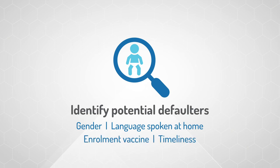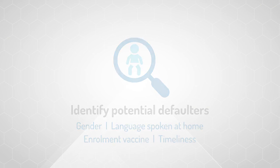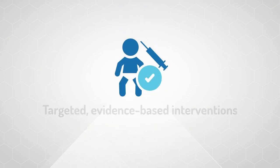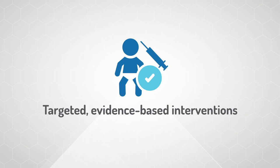language spoken at the child's home, enrollment vaccine, and timeliness. Accurate identification of potential defaulters can be leveraged to design targeted, evidence-based interventions in resource-limited settings to improve immunization coverage and timeliness.